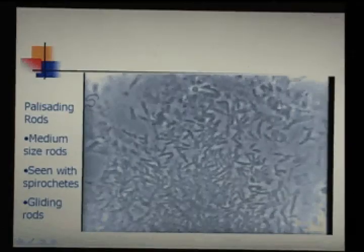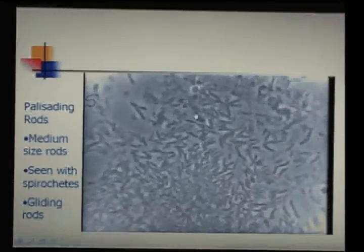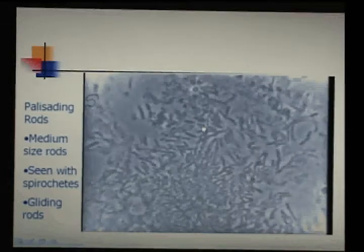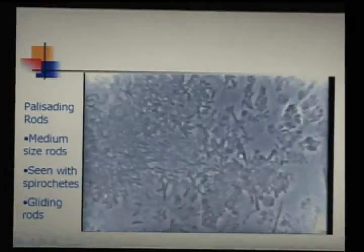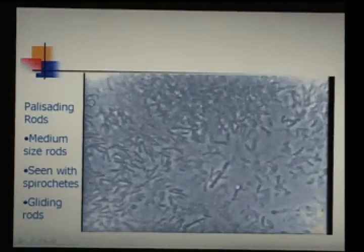Here are some medium-sized rods. These are not in furious motion but relatively calm motion, yet still associated with disease. They're almost always seen with spirochetes, which you can see in between.